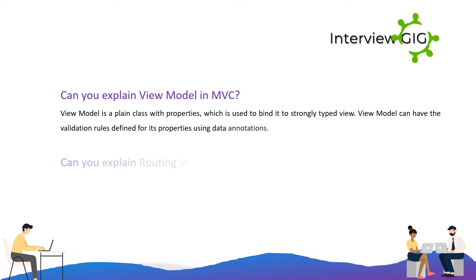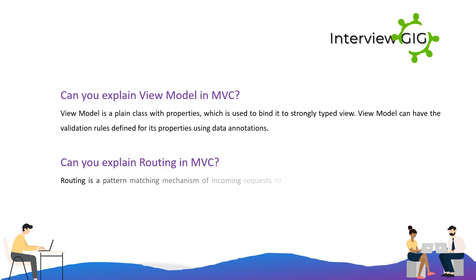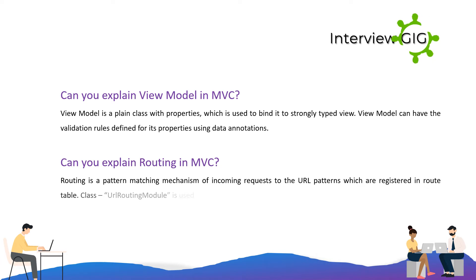Can you explain routing in MVC? Routing is a pattern matching mechanism of incoming requests to the URL patterns which are registered in the route table. The URL routing module class is used for the same process.